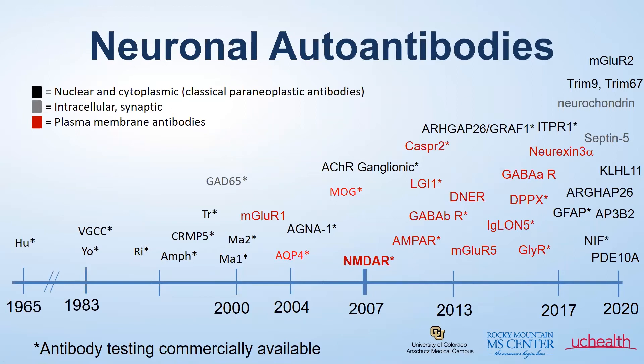Revisiting this slide — there are many antibodies identified in autoimmune encephalitis. Notably, not all of these antibodies are commercially available for testing, as noted with the asterisk. Therefore, some have yet to be discovered, and this can certainly have an impact on what we find on the diagnostic testing. If it's an antibody we're not aware of or it's not commercially available, there is a high potential for missing it when we do the diagnostic workup.